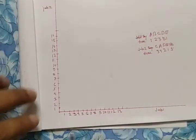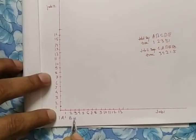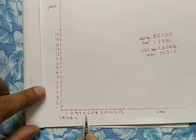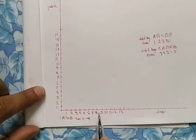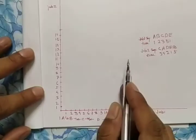For Job 1 represented on the x-axis, write down the sequence and corresponding time. Machine A requires 1 hour, so mark from 0 to 1. Machine B requires 2 hours, marking from 1 to 3. Machine C requires 3 hours, marking up to 6. Machine D requires 5 hours, marking up to 11. Machine E requires 1 hour. Similarly, write down the sequence and corresponding time for Job 2.